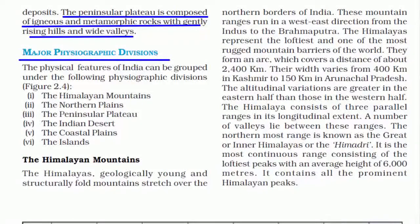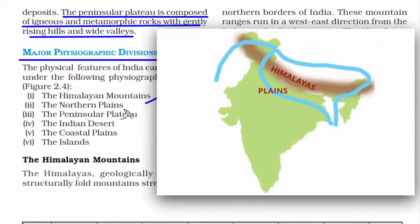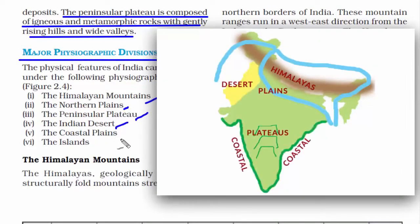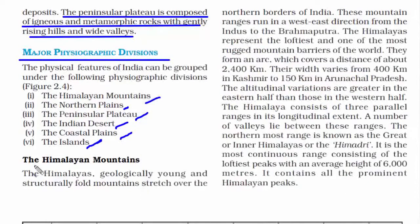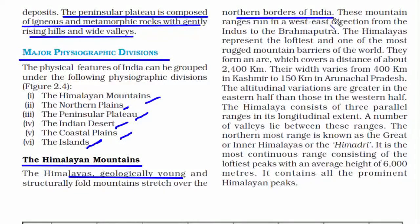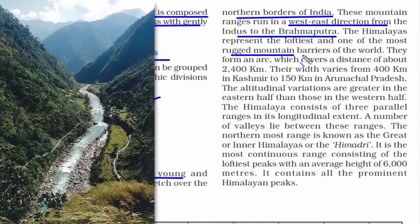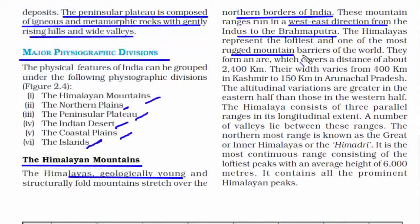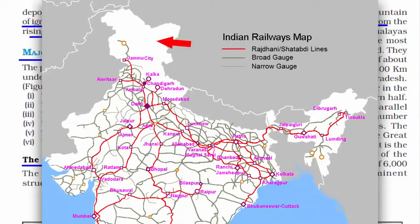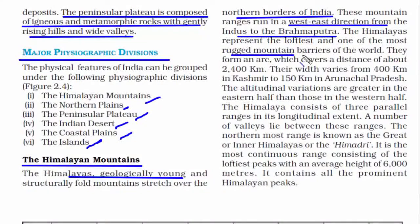The major physiographic divisions are: the Himalayan mountains, the northern plains, the peninsular plateau, the Indian desert, the coastal plains, and the islands. The Himalayas are geologically young and consist of a huge chain of mountains along the northern borders of India. They are one of the most rugged mountain barriers in the world, with high peaks and deep valleys and gorges formed by fast-flowing rivers. This ruggedness means there is very little railway infrastructure in the northern part of India.